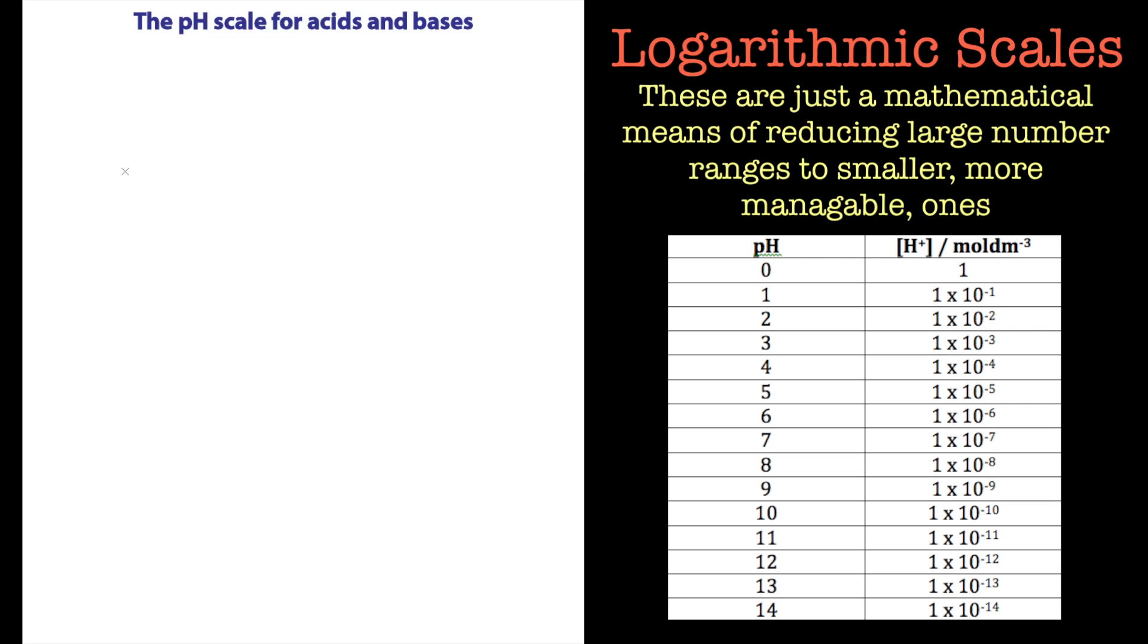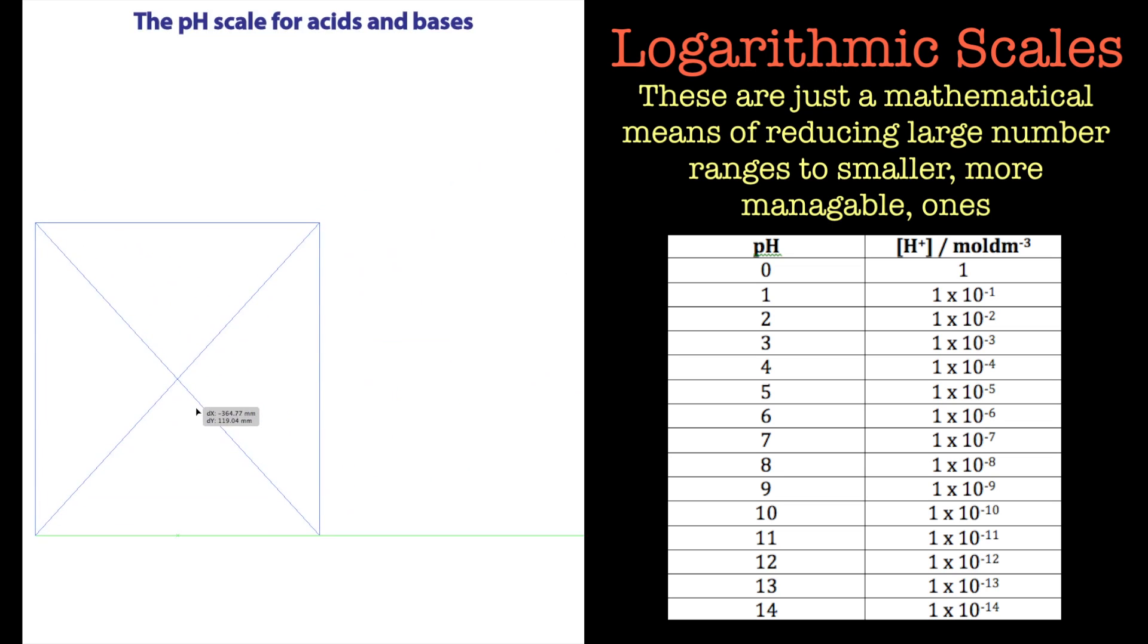The pH scale is a logarithmic scale. It's there because we've got a lot of numbers to cover. If we look at this, we've got a large range of numbers to describe the concentration of hydrogen ions in solution, so we've come up with this pH scale.